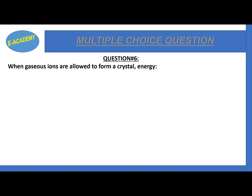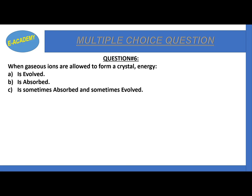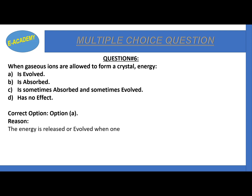Question number 6: When gaseous ions are allowed to form a crystal, energy is evolved, absorbed, sometimes absorbed and sometimes evolved, or has no effect? The correct option is A: energy is evolved. The energy is released when one mole of ionic crystal is formed from gaseous ions, and this energy is called lattice energy.